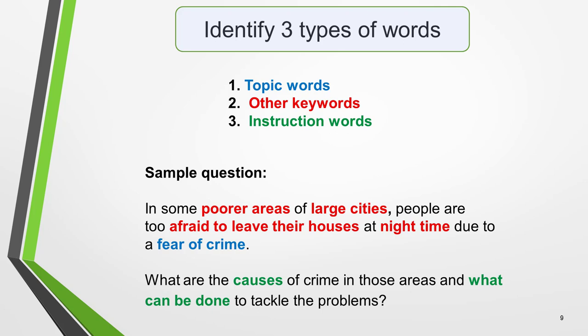The sample question reads: 'In some poor areas of large cities, people are too afraid to leave their houses at night time due to a fear of crime. What are the causes of crime in these areas and what can be done to tackle the problems?' Topic words, shown in blue, are the ones that identify the general subject of the question — in this case, fear of crime. To know what specific aspect to write about, we look at the other keywords, highlighted in red.